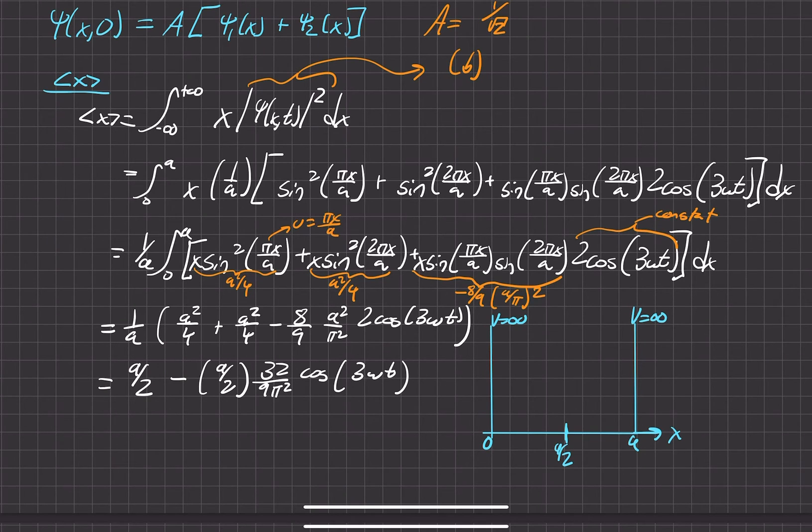And then it oscillates because you have a time dependent form and it oscillates sinusoidally in the form of cosine here with some amplitude and that amplitude is right here. I think that's another part of the question is what's the amplitude of your oscillations. The amplitude of the oscillation is right here. Whatever is the coefficient of the time dependent function right here. And if we just approximate this value right here, this whole thing is approximately 0.36 times a over 2.